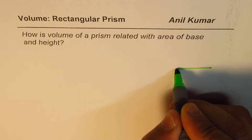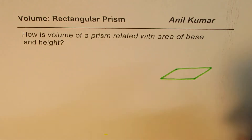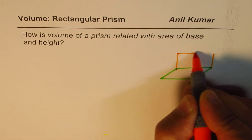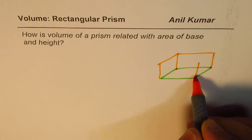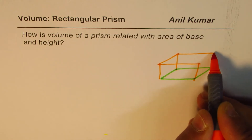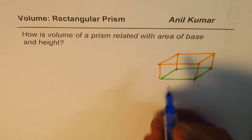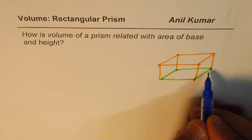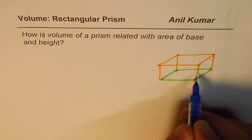To answer this, let's consider a rectangular prism. That is the base, and the height is denoted by this orange color. That's a rough sketch, but it gives you an idea — it looks like a rectangular prism with the base shown on screen and the height in orange.